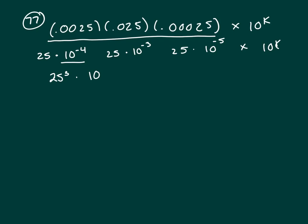So negative 4 minus negative 7, that's negative 12. So it's times 10 to the negative 12 times 10 to the k.